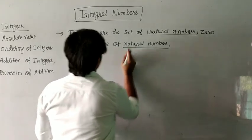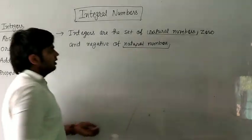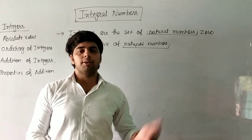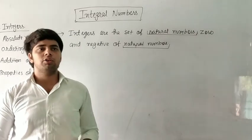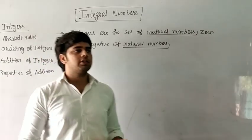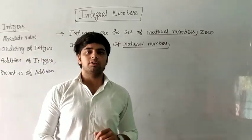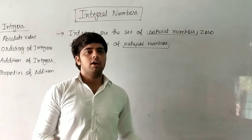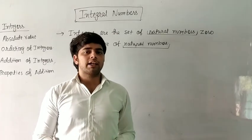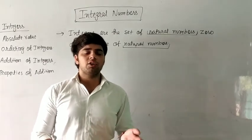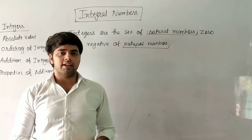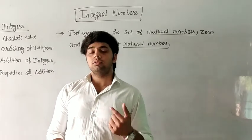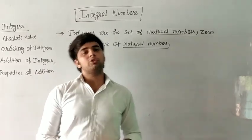Natural numbers are the numbers of counting — 1, 2, 3, 4, 5, 6. Whole numbers are natural numbers plus zero.